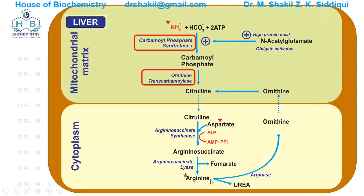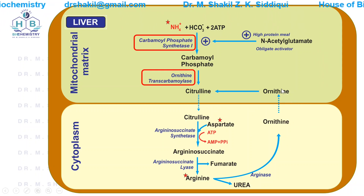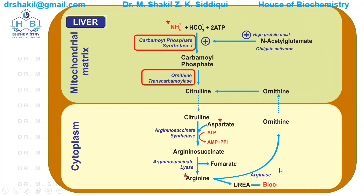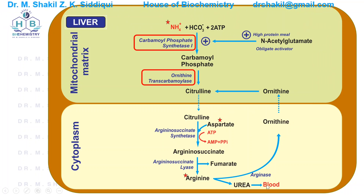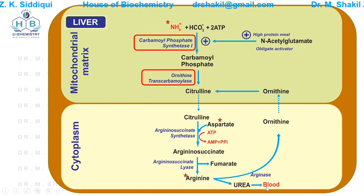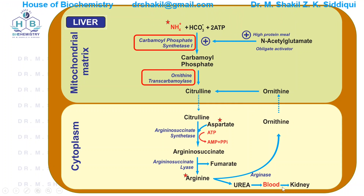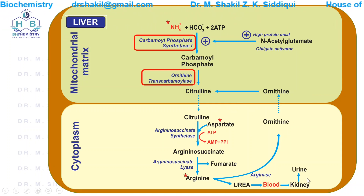Once arginine is cleaved into ornithine, ornithine returns to the mitochondria to continue the cycle. The urea produced is released into the blood. Because urea can easily cross membranes, it leaves the liver cytoplasm, enters the blood, and is carried to the kidneys where it is filtered and excreted in the urine.